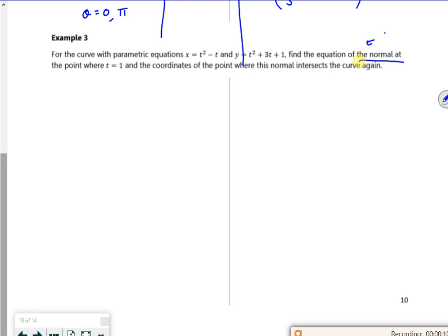So I want to find the gradient of the tangent first, so I need to differentiate. So x is t squared minus t, dx dt is 2t minus 1, and y is t squared plus 3t plus 1.